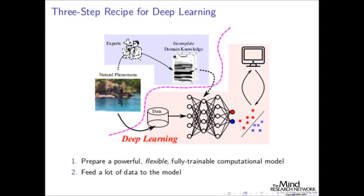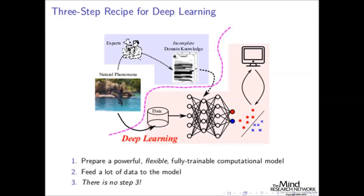The really nice thing about deep learning is that it's not rocket science. Here's a three-step recipe: first, prepare a very powerful, flexible, end-to-end trainable computational model such as a neural network — or any nonlinear function approximator. Second, feed a lot of data into the model to perform a certain task. And then there is a step three — that's it. Just do the first and second step and it will solve quite a lot of your problems.